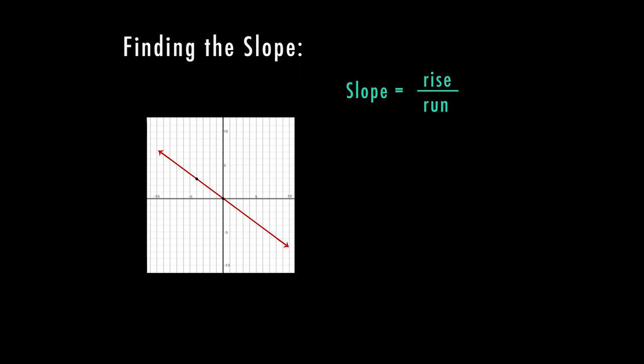So again, we're just finding that distance from the rise over the run. So from this y value down one, two, three, my rise is a negative three.